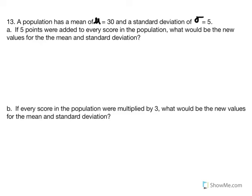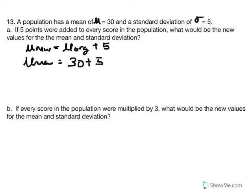Given our rules, the rules of scaling say the new mean will equal the original mean plus whatever we did with the constant, so plus 5 points. Therefore, the new mean equals the original, which was 30, plus 5, equals a new mean of 35.